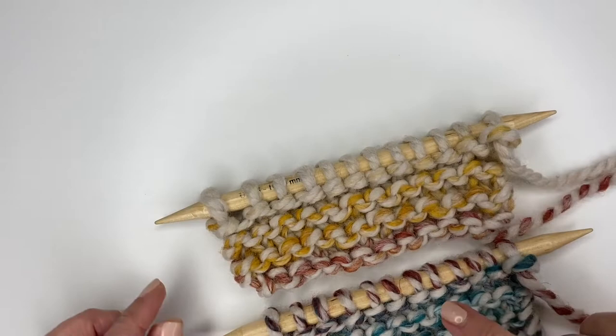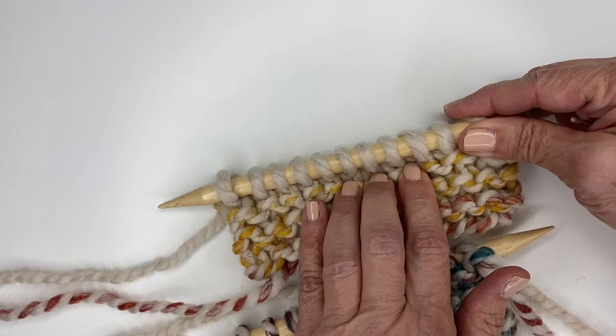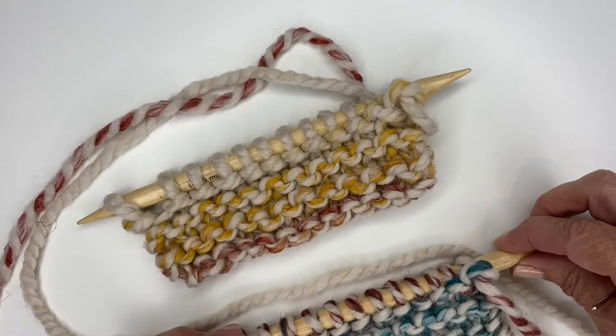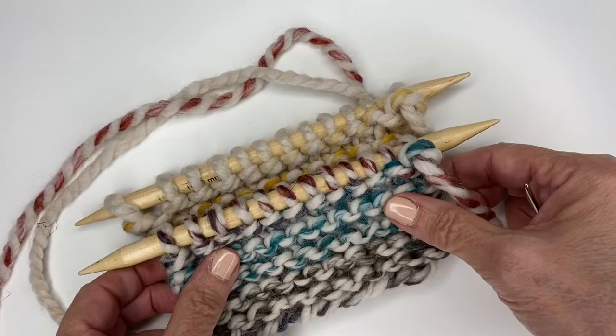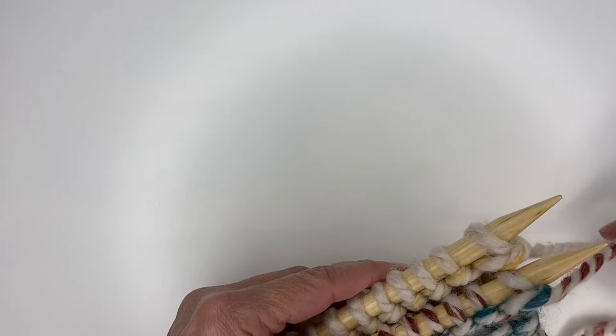If this is the right side of your work, the purl bumps are there. This was the wrong side of your work and you can see the purl bumps are one away from the needle. So you flip that over. You need to have both purl bumps facing you like this - one tail end at one end of your work, the other at the other end, and both working yarns on the right side of your needle.